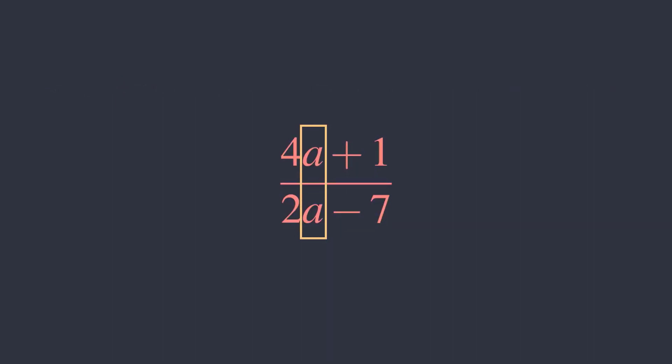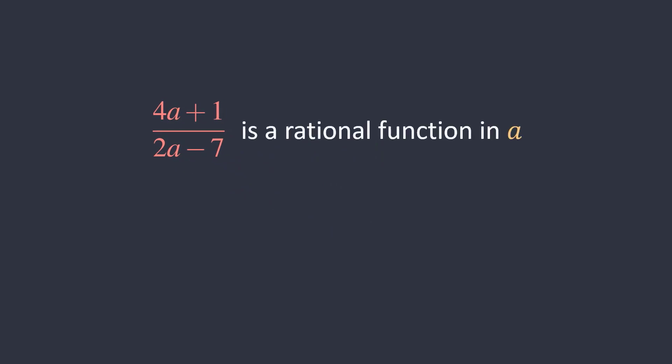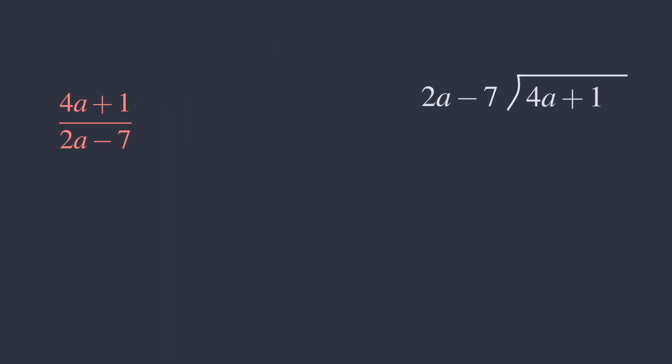To start, treat a as a variable. This expression is now a rational function. Since the degree for the numerator and the denominator are the same, we can use long division to rewrite it as q plus r over 2a minus 7, where q is the quotient and r is the remainder.